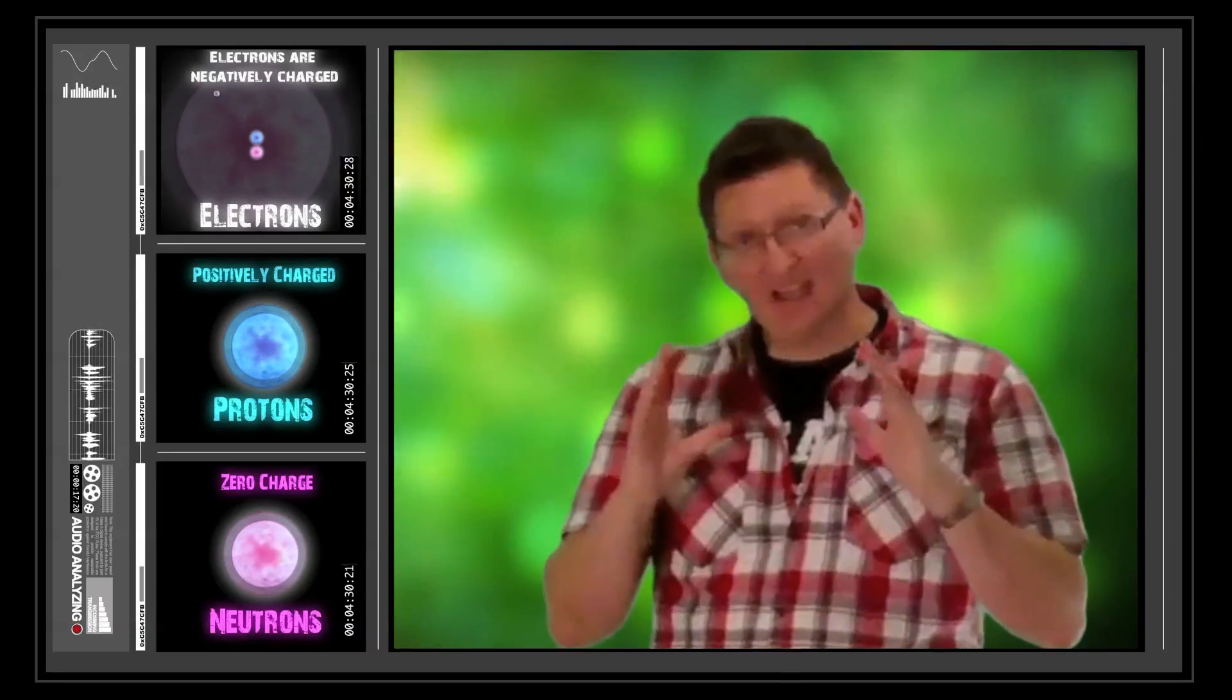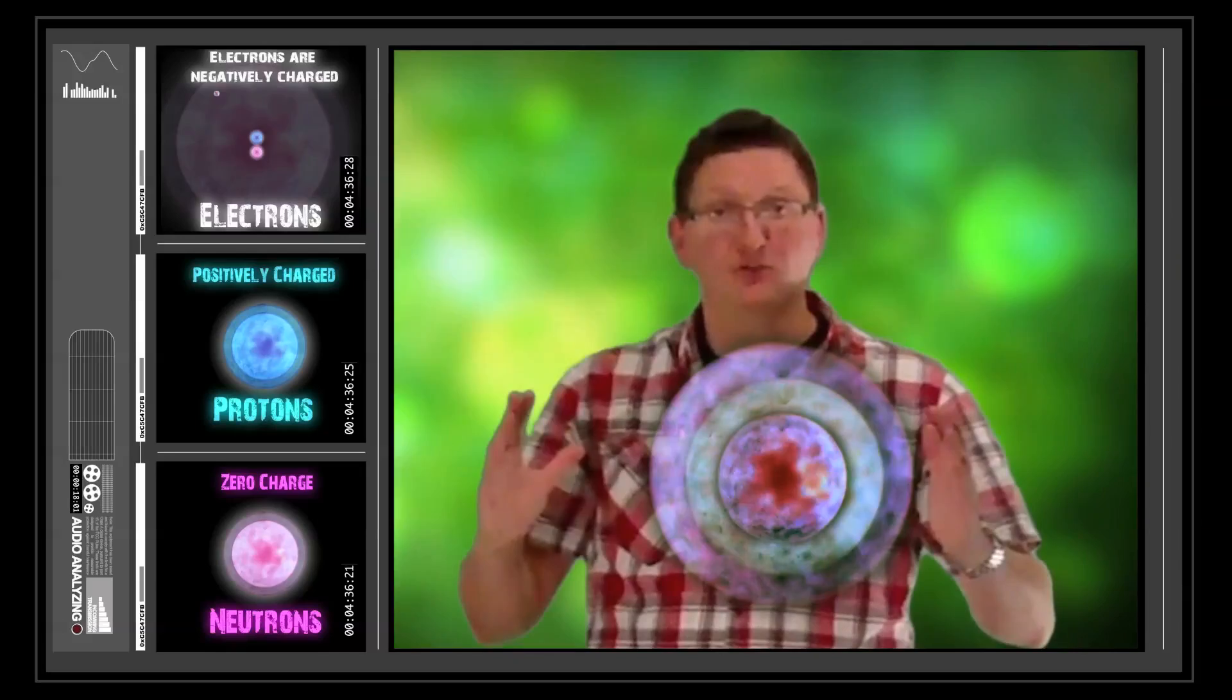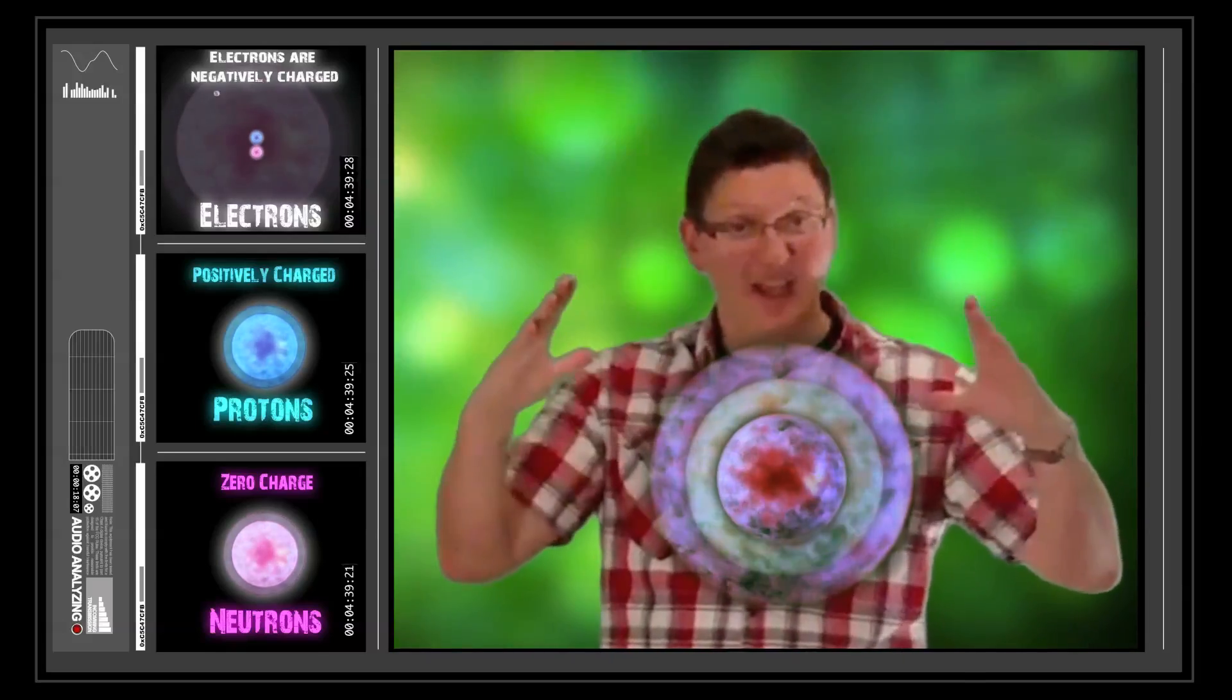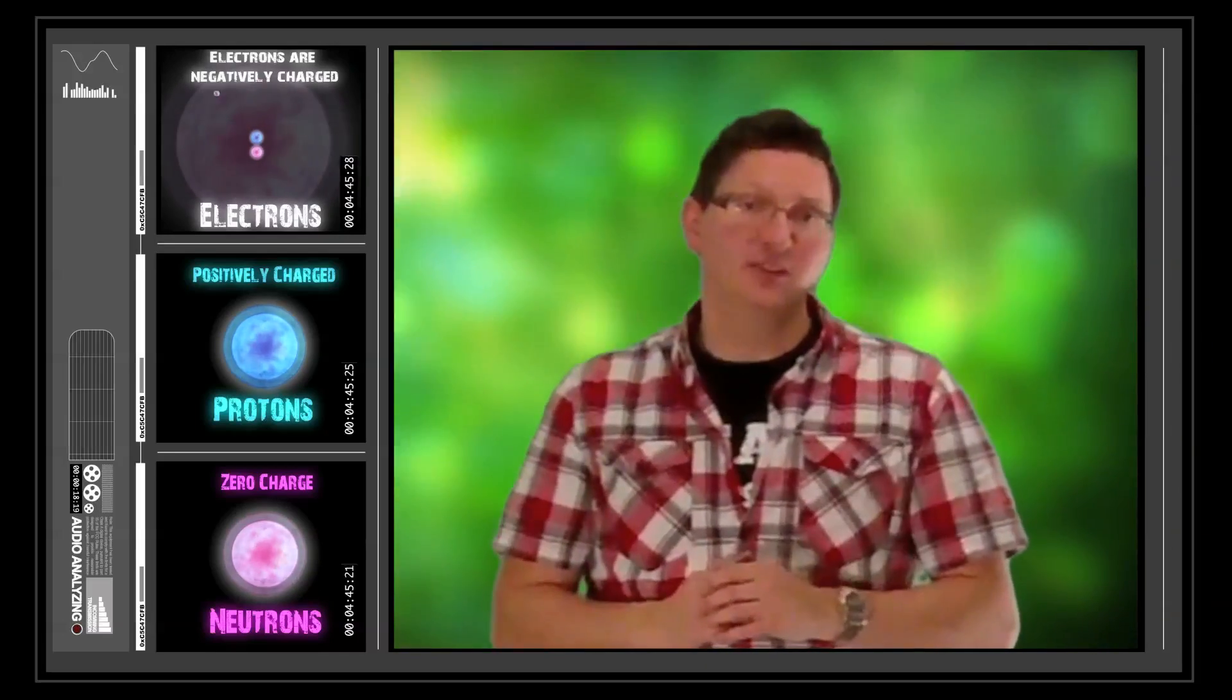So basically, atoms are made out of protons and neutrons, and they're surrounded by electrons. Electrons can occupy shells, and they can go in 2, 8 and 8, depending on which shell they're in. And the actual element is named after the number of protons. So that's what defines the name of the element.